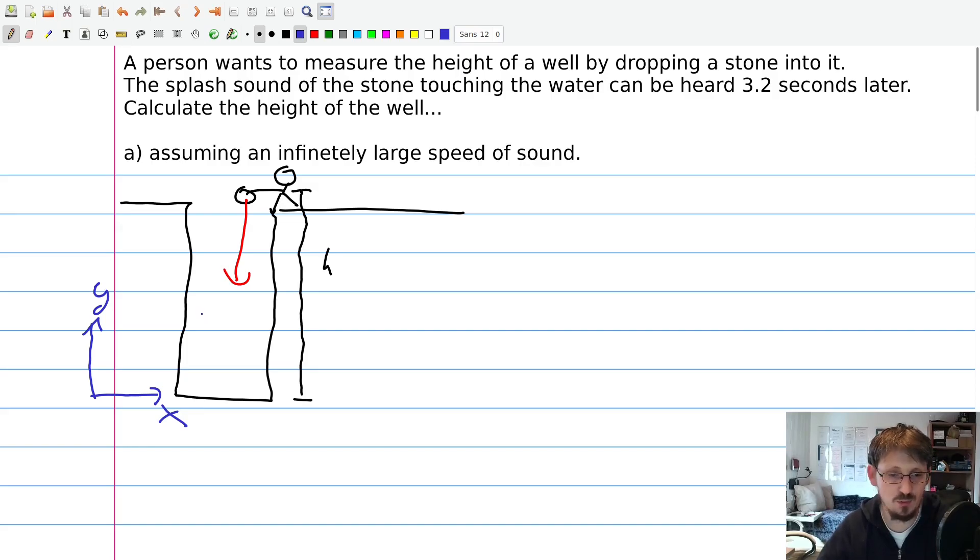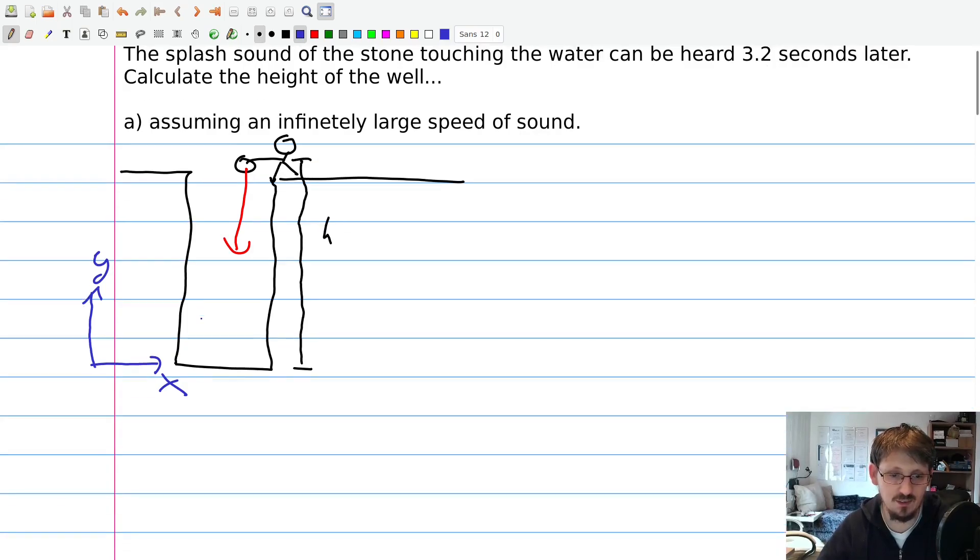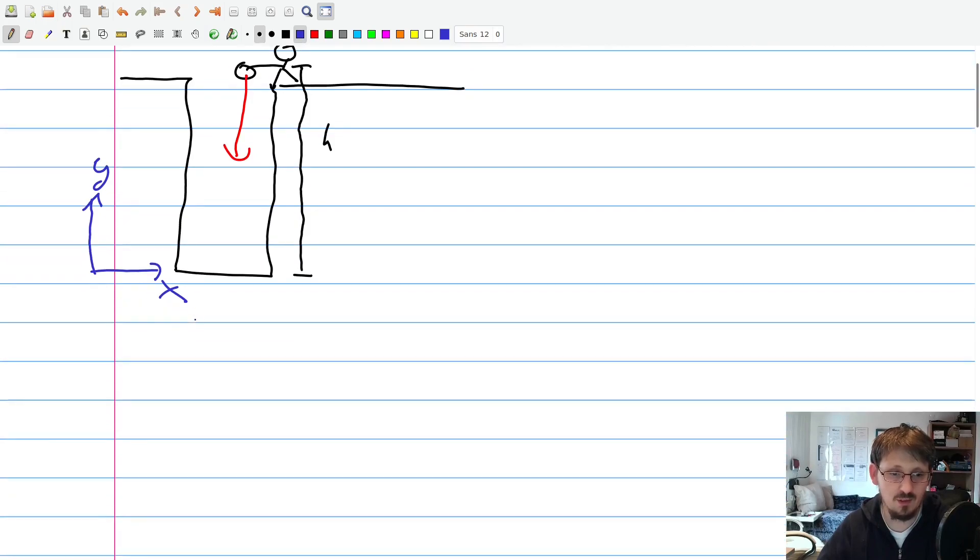There is a very common relation between acceleration, distance and time. Maybe you have seen this formula before, I will just write it down here. y(t) is given as one half a t squared plus v0 t plus y0. So a is of course the acceleration, v0 is the initial speed of the object and y0 is an initial distance.